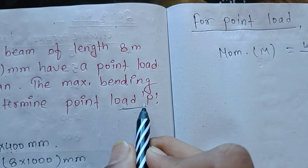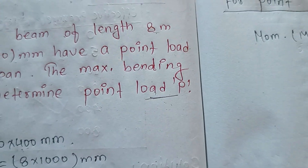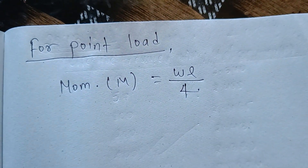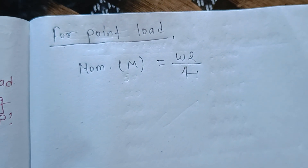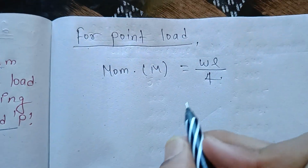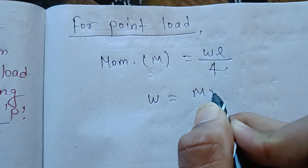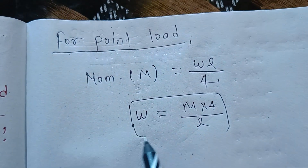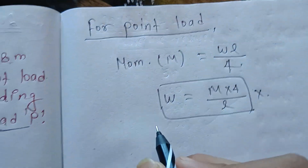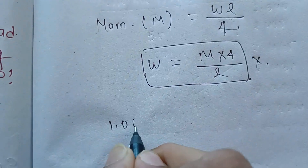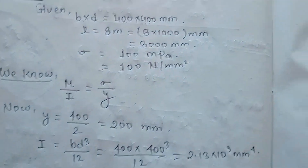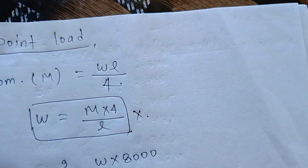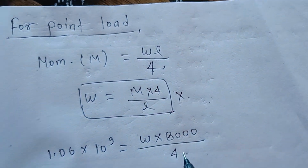For a simply supported beam with a point load at the center, the bending moment formula is M equals WL by 4. For a uniformly distributed load, it is WL squared by 8. Since we have a point load, M equals WL by 4. So W equals M into 4 upon L. Substituting L equals 8,000.